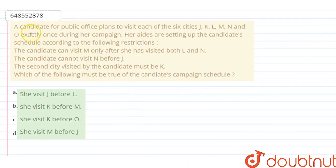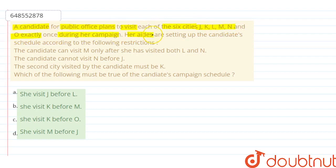Hello, the question is: a candidate for public office plans to visit each of the six cities — J, K, L, M, N, and O — exactly once during her campaign. Her aides are setting up the candidate's schedule according to the following restrictions.